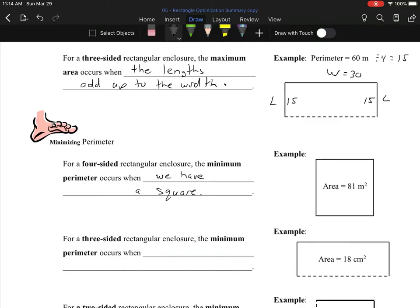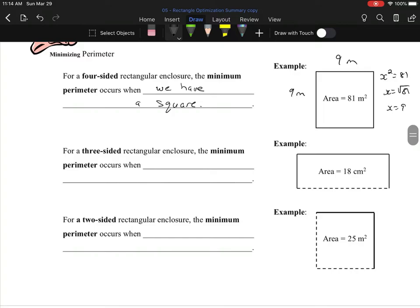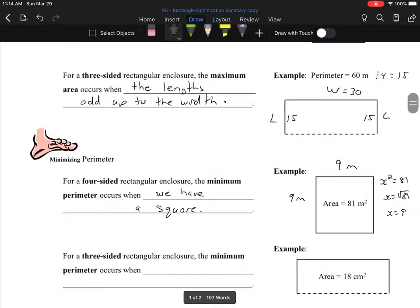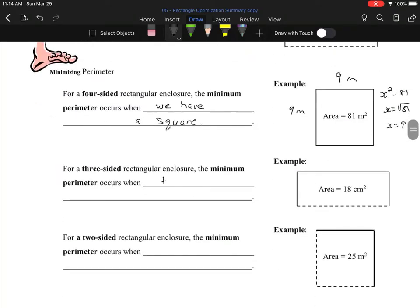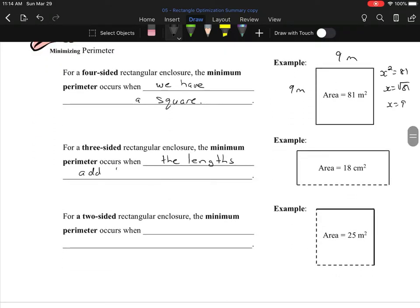Now if they give you the area they want, finding the side length is a little bit different because what you want to do is you want to find the side length. It'll be x squared equals 81, so you actually want to take the square root here to get these two sides. So when you're given your perimeter you've got to divide it to get the sides. When you're given the area you've got to square root it. And for a three-sided enclosure, the minimum perimeter occurs when, again just like before, the lengths add up to the width.